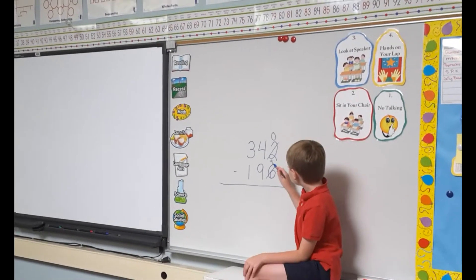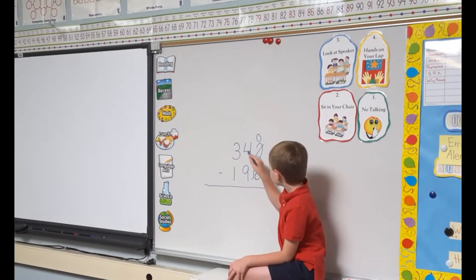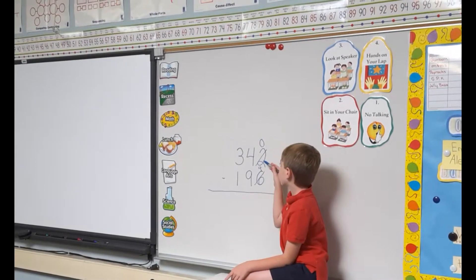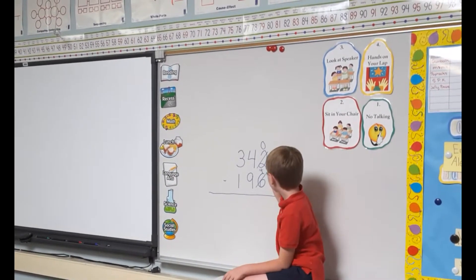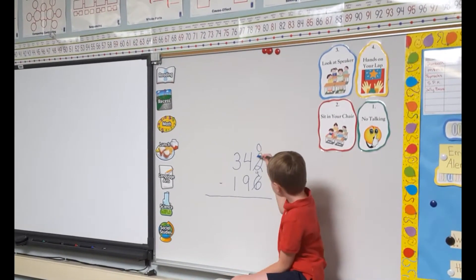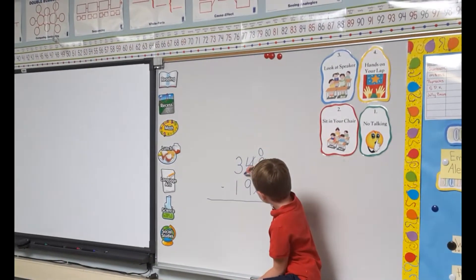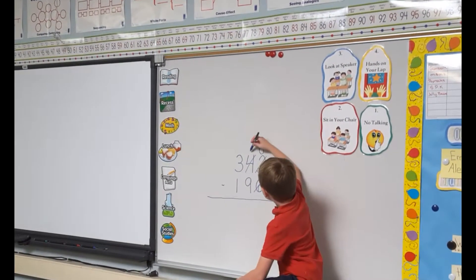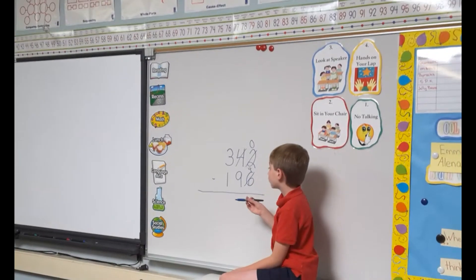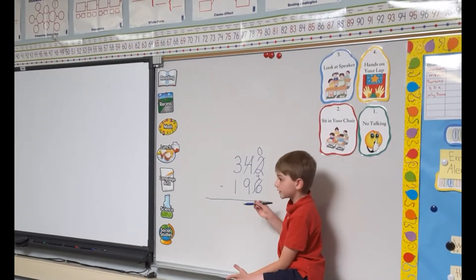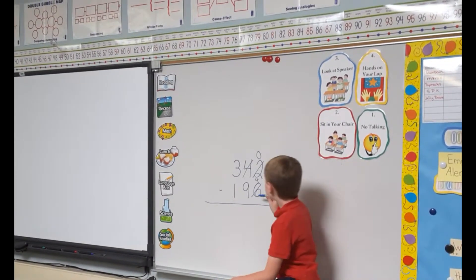After that, you need to take away from here since you can't take away anymore from here. Now, 4 right here. And then you just find out 10 minus 4 equals 1, which equals 6.